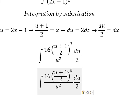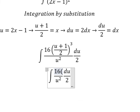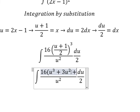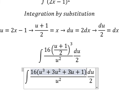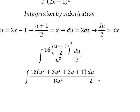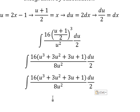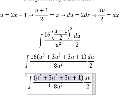After substitution we have 16 times ((u+1)/2)³ divided by u², times du/2. Expanding (u+1)³ gives u³ + 3u² + 3u + 1. Simplifying the constants: 16 divided by 8 equals 2, then divided by 2 equals 1, giving us (u³ + 3u² + 3u + 1)/u².